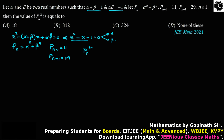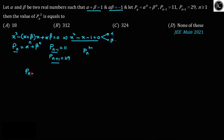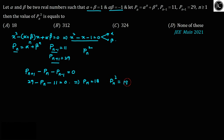We have to find the value of p_n first, then simply square it to get the answer. By applying Newton's Girard theorem to x² - x - 1 = 0 with roots alpha and beta: among p_n, p_(n-1), and p_(n+1), the highest is p_(n+1), so we write p_(n+1) - p_n - p_(n-1) = 0. Now p_(n+1) = 29, p_(n-1) = 11, so 29 - p_n - 11 = 0, giving p_n = 18. Therefore p_n² = 18² = 324. Option C is correct.